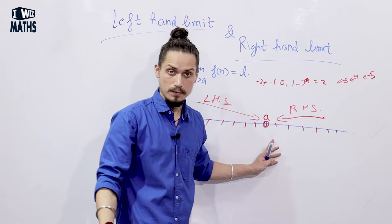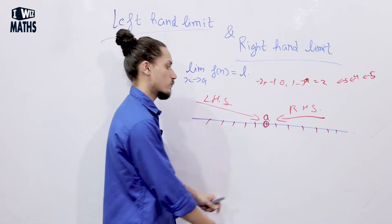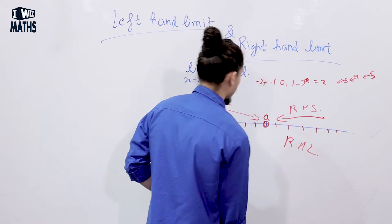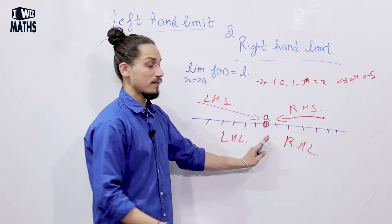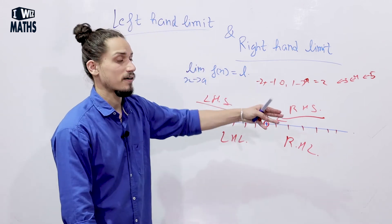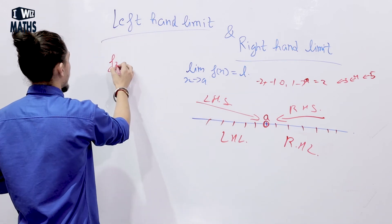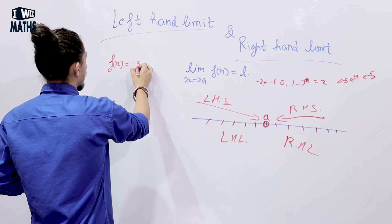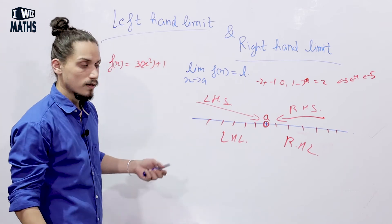If we approach the limit from the right hand side, it's called the right hand limit. If we approach from the left hand side, it's called the left hand limit. Suppose we have f(x) = 3x² + 1 and we want to find its limit at x = 5. We can find both the left hand limit and right hand limit.